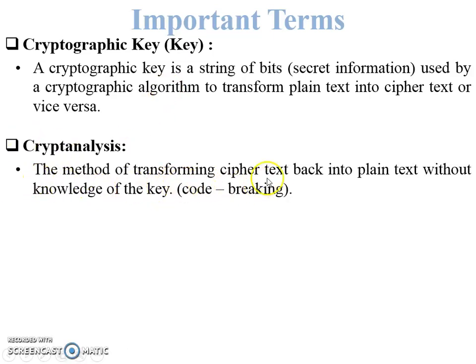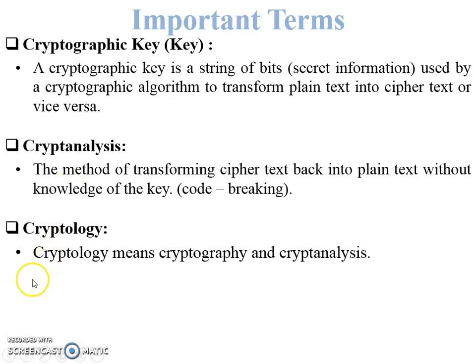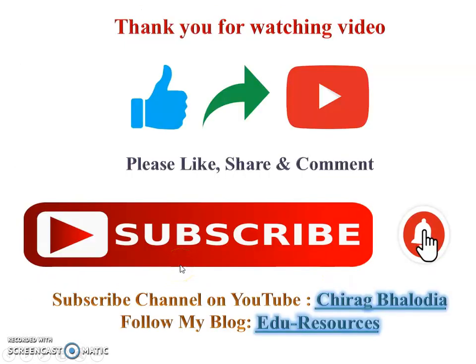Next is cryptanalysis. Cryptanalysis is the method of transforming ciphertext back into plain text without knowledge of the key — it is also called code breaking. When ciphertext is captured and converted into plain text without knowing any key, this is called cryptanalysis.